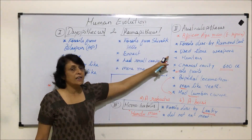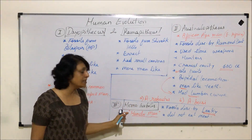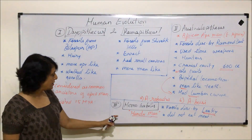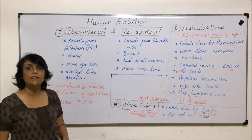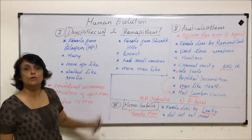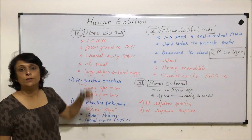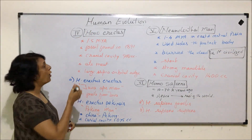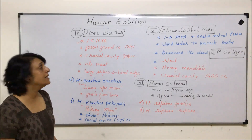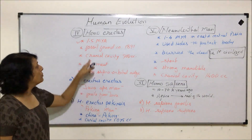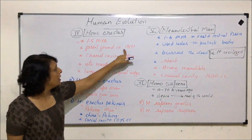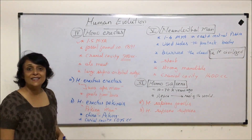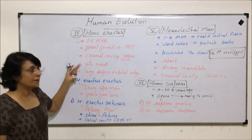The evolutionary lineage so far includes Dryopithecus, then Australopithecus, then Homo habilis. After Homo habilis, the next fossil found was of Homo erectus. It is believed they existed about 1.5 million years ago, with the most notable fossil discovered in 1891. Their cranial cavity was about 900 cubic centimeters, and they ate meat.